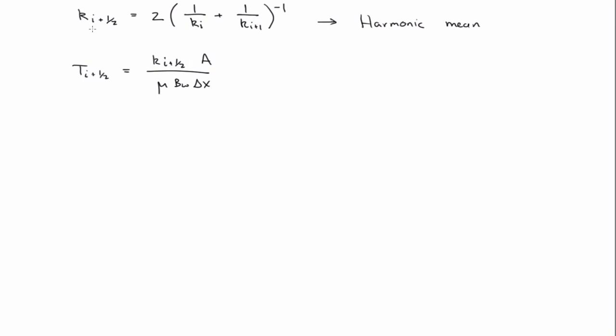Now for the other example: 100 millidarcy in the I-th room and 50 millidarcy in the I+1 room. So it's 1 over 100 plus 1 over 50, take the inverse, times 2 — that gives 66.67. So it's not 75, it's not the arithmetic mean, but it is in between, so it passes the sanity check. The harmonic mean will always be lower than the standard algebraic mean.